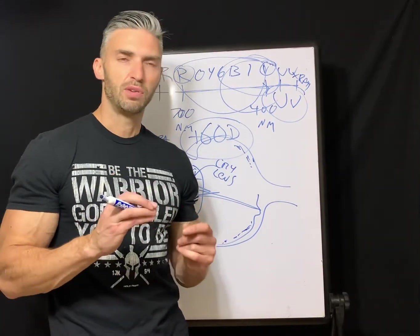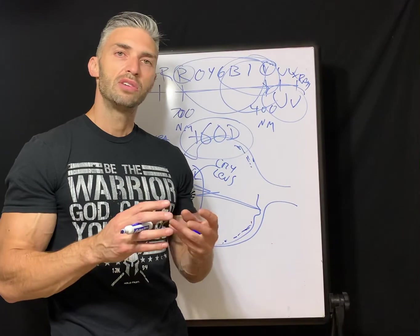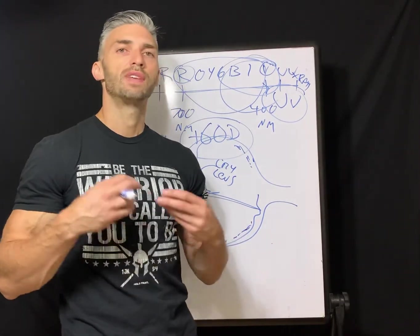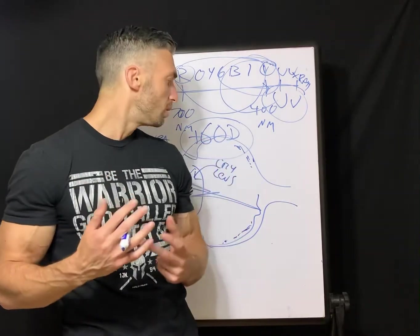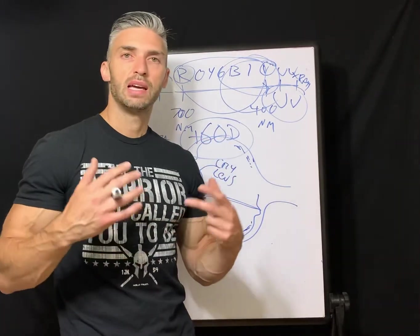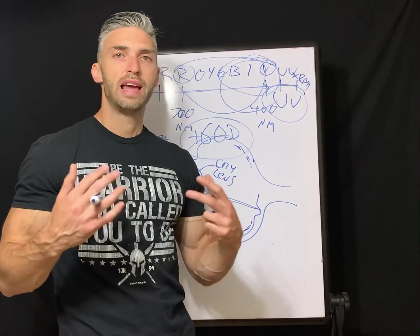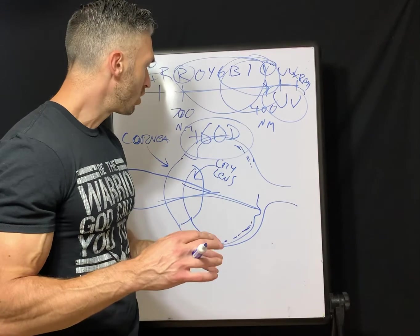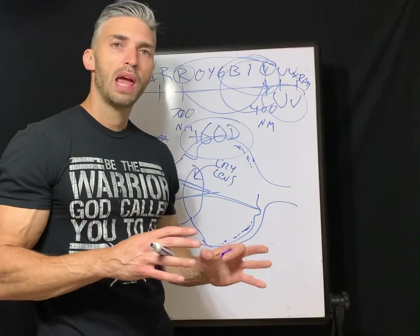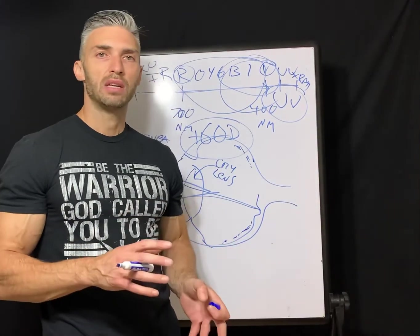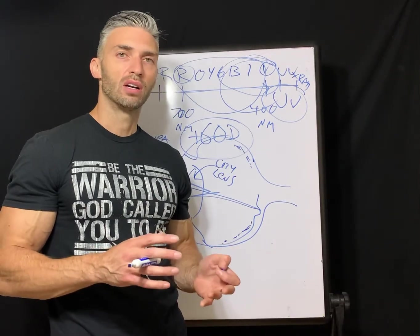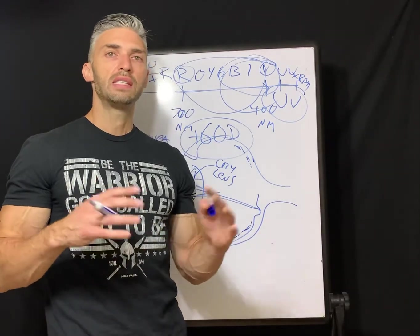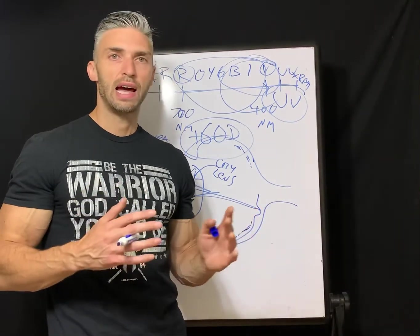Cones are harder to activate, but when they do, they create a specific pattern — an algorithm — that travels through the optic nerve to the occipital lobe, and the brain interprets it as colors and shapes. The cone photoreceptor cells only activate based on certain wavelengths of color, and that's how our brain is able to interpret the world around us through these intricate algorithms.